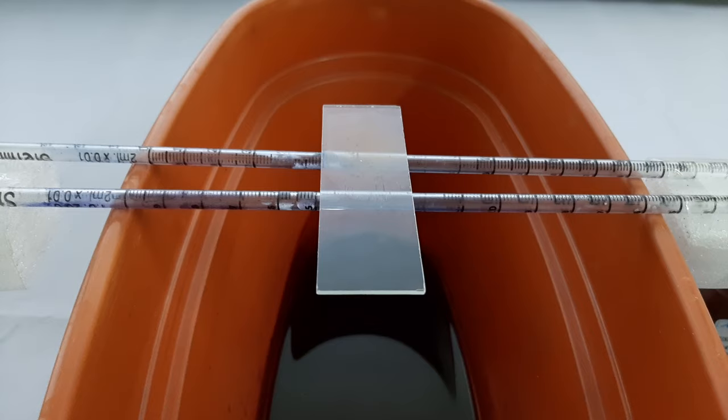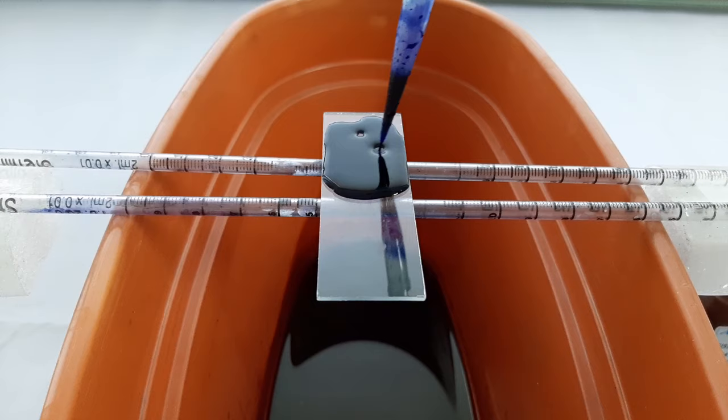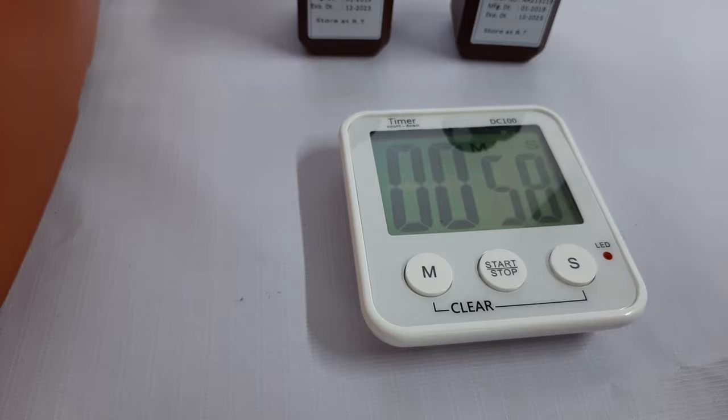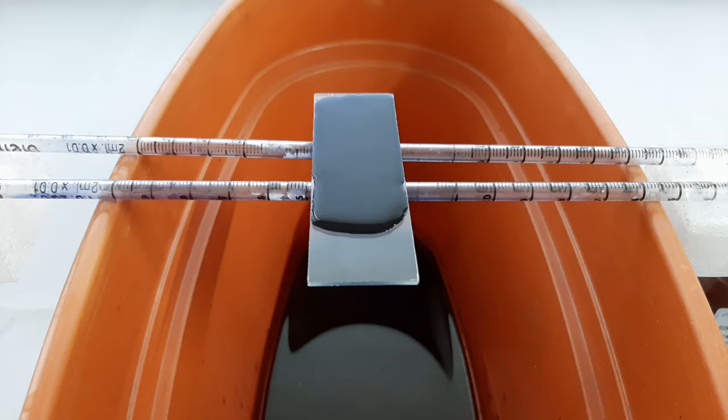Once the slide is air dried, place the slide on the staining station and add approximately 1 ml of Leishman stain. Make sure to cover the entire surface area of the smear with the stain, then incubate for 1 minute.